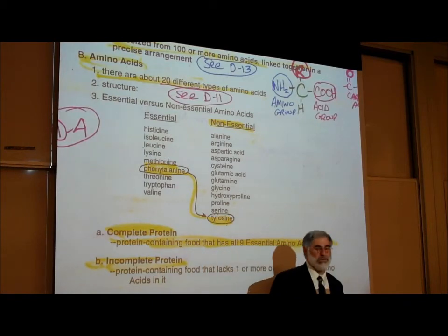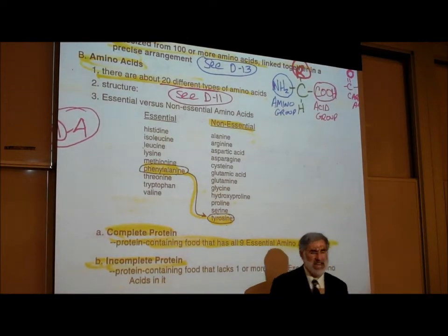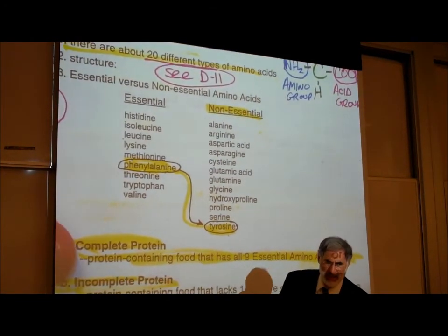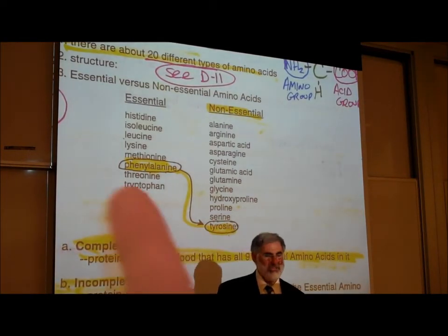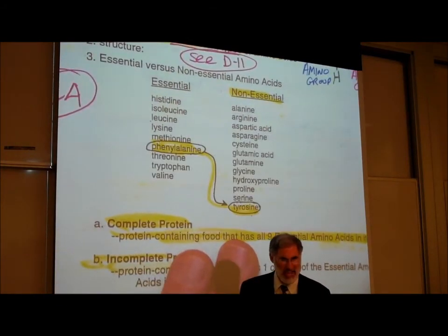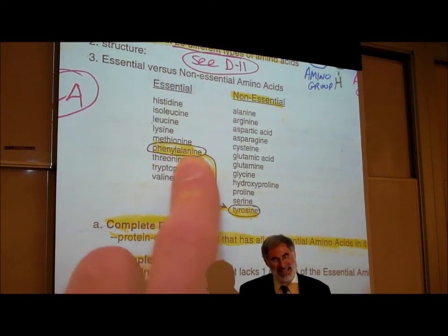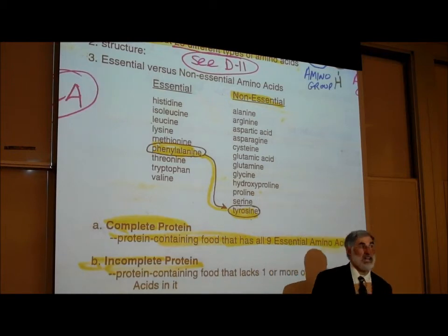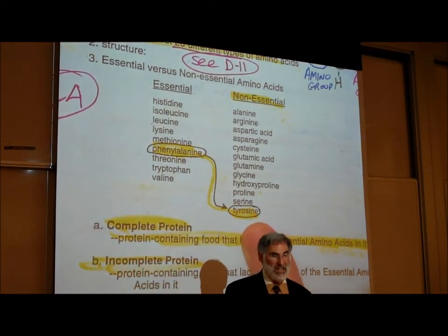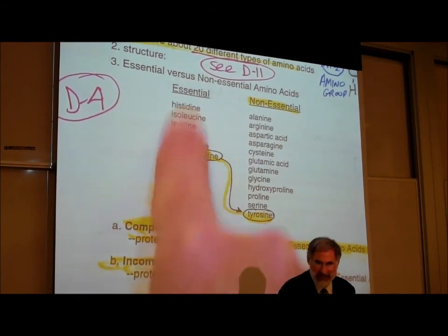Of the 20 amino acids, only about half — approximately 10 — are regarded as essential, meaning we need them in our diet every day. The other approximately 10 are regarded as non-essential. We do need all 20, but the cells of our body have the ability to convert some essential ones into non-essential ones. For example, the amino acid phenylalanine can be converted by our cells into tyrosine — so we don't need tyrosine in our diet as long as we have phenylalanine. However, we cannot go in the reverse direction — we can't convert tyrosine back into phenylalanine. So the essential amino acids are absolutely essential in our diet.